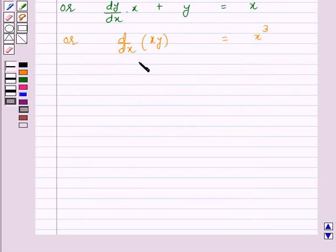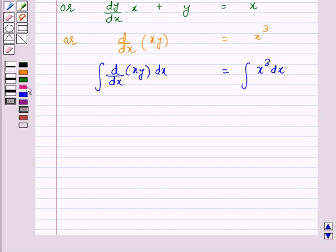Now, integrating both sides with respect to x, we have integral of d over dx of xy dx is equal to integral of x cubed dx, or xy is equal to x raised to power 4 over 4 plus c.